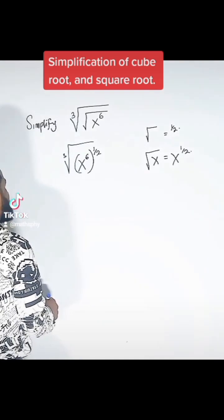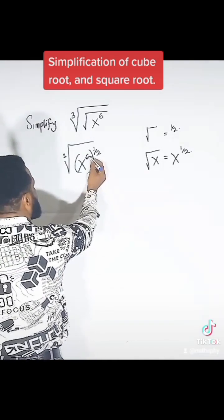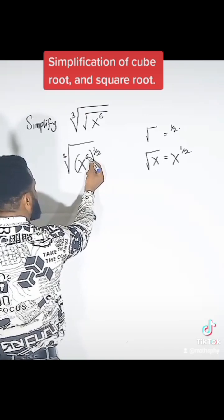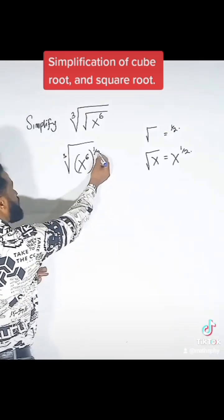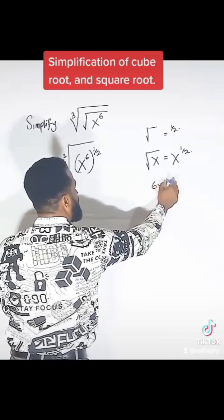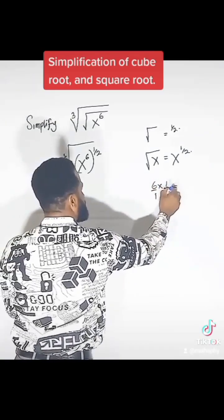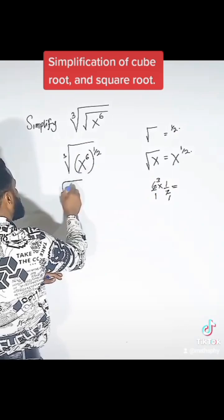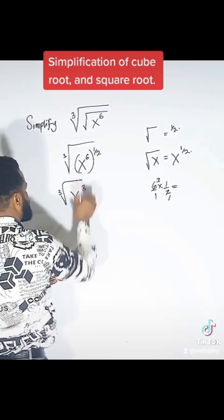Remember the power law? Power law says that the power will multiply power. This is a power of 6, and this is another power of 1 over 2. Power will multiply power, so we have 6 times 1 over 2. The answer is 3 — 2 cancels into 6 to give 3. So we have the cube root of x raised to the power 3.